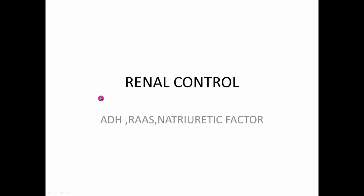Welcome to another session of the excretory system. Today we are going to learn about how the kidneys are controlled. Kidneys are controlled by the hormonal system. The hormones involved in renal control are antidiuretic hormone, aldosterone, the renin-angiotensin system (the RAS system), and natriuretic factor, which is present in the heart.